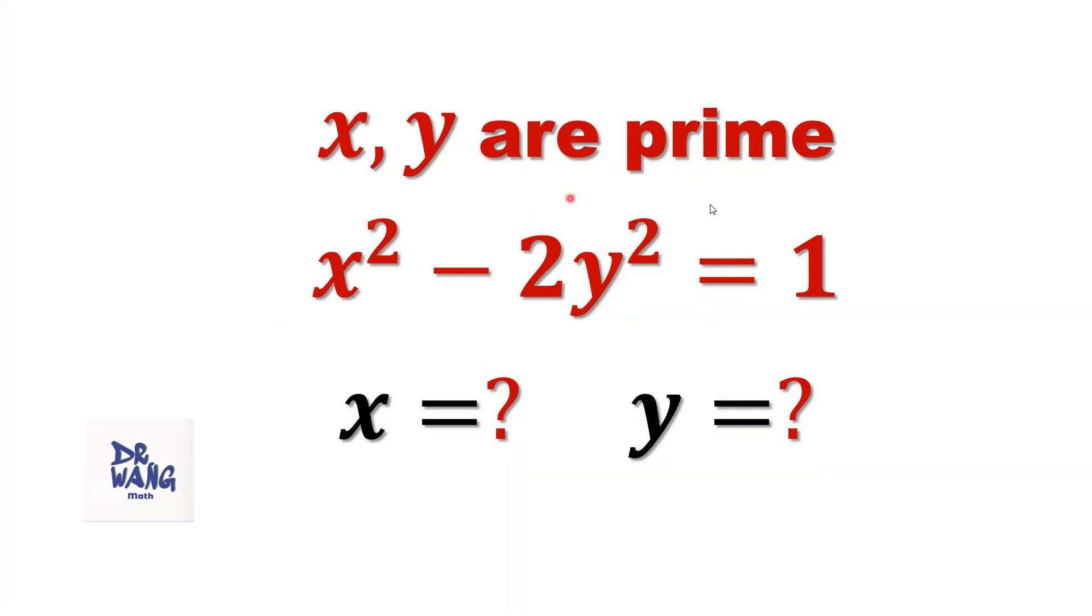We only have one equation. We have two variables, how to solve this kind of question? Here we have additional information: both x and y are prime.